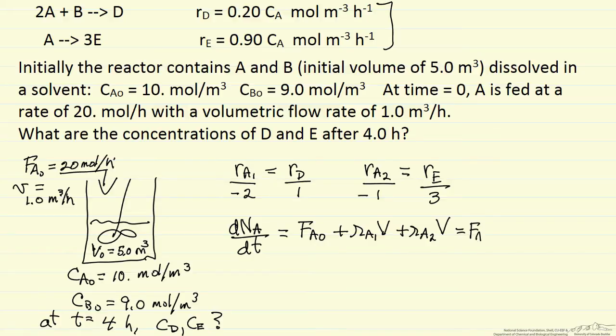This is F_A0, and we've written down minus 2 times the rate of D times the volume, and then minus 1/3 the rate of E times the volume.